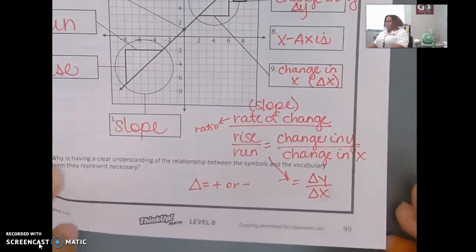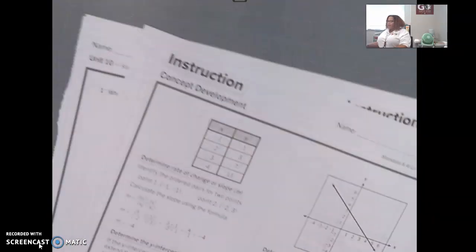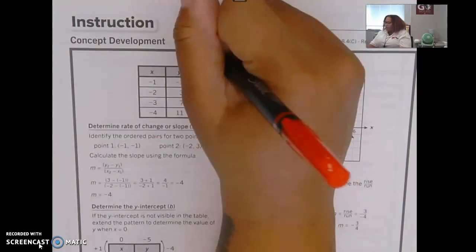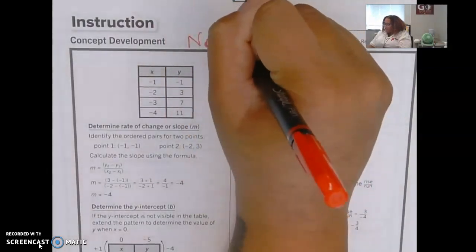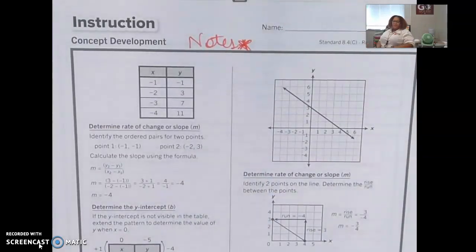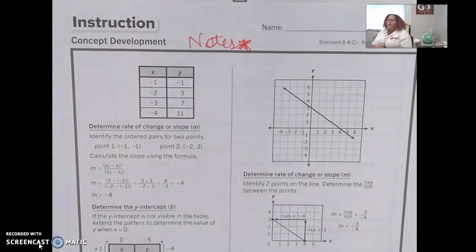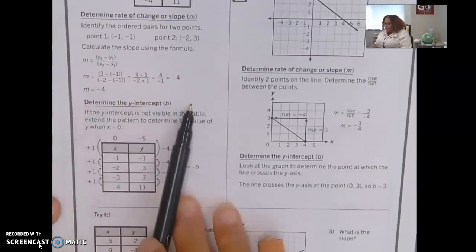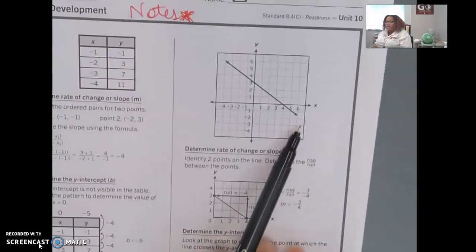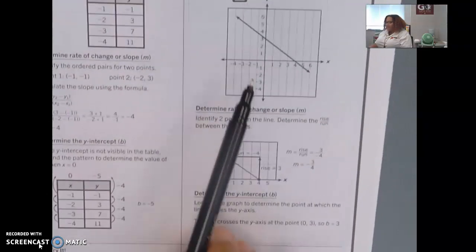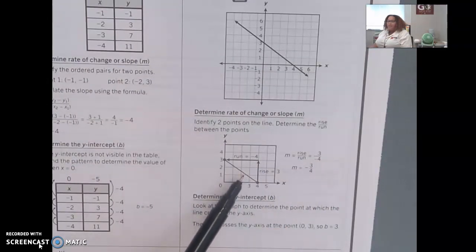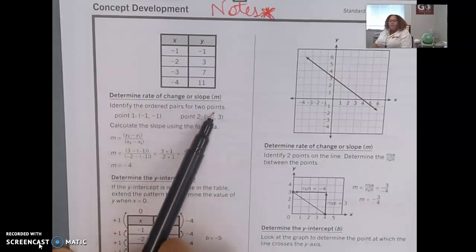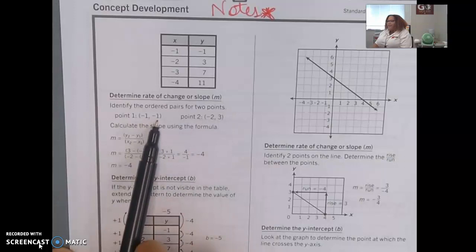Maybe that would be smart. Okay, next page, flip it on over. On the next page, the concept development, this is your notes guys, this is what you're going to refer to to help you do your homework. So if you want to tear this out and put it in your notebook, great, but don't do so now. Alright, we're determining the rate of change or the slope with a table. We're determining the y-intercept with a table over here. We're determining the rate of change with a graph, and in order to determine the y-intercept we need to look back at this graph.